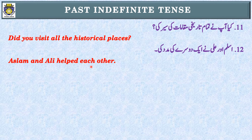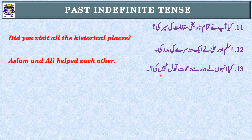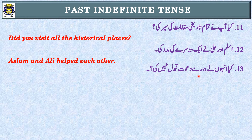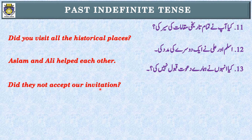Sentence number thirteen: 'Did they not accept our invitation?' Identification of tense: past indefinite tense. Simple: 'They accepted our invitation.' Negative: 'They did not accept our invitation.' Interrogative: 'Did they accept our invitation?' When we use 'did' in negative or interrogative, the main verb takes its first form. Never forget to put a question mark at the end of interrogative sentences.